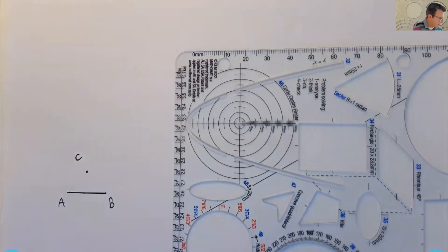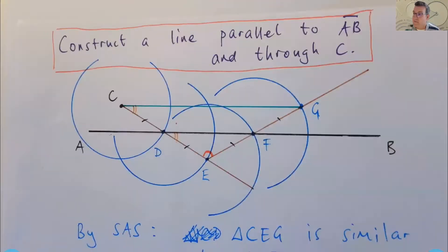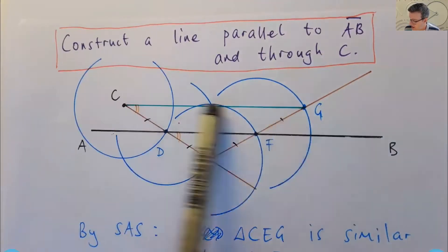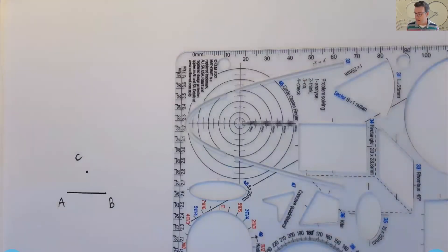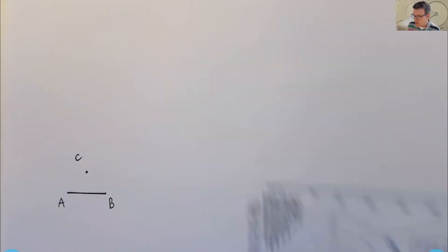But remember, in the previous videos, we looked at how you can produce a parallel line through a point to another line. And so we're going to use that essentially here, rather than what the traditional Euclidean approach is in the elements.